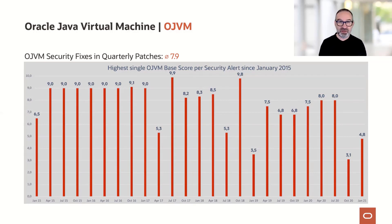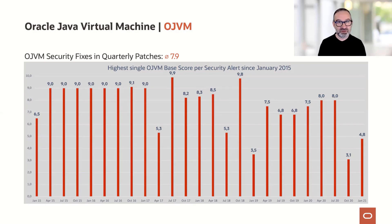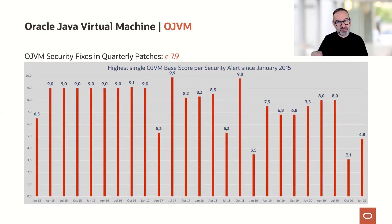Don't get me wrong — I'm not saying OJVM is bad. I'm just saying if you have OJVM, the probability that you have to patch quarterly is extremely high. You can either use the OJVM bundle patch, which is a separate download, or you can use the combo patches. The combo patches include OJVM, the database, and I think also the grid infrastructure — a bigger piece with separate subdirectories — and then you decide what you want to apply.